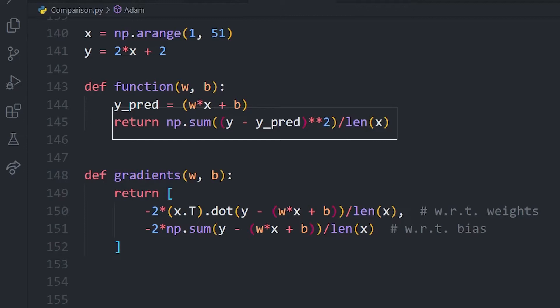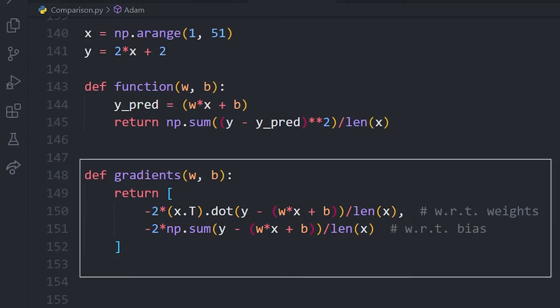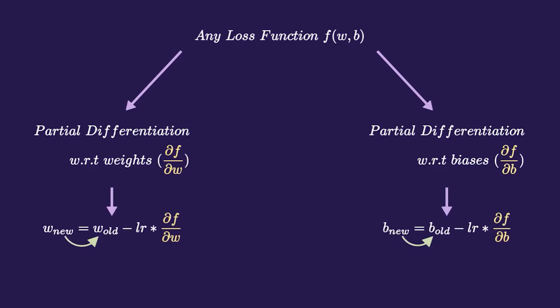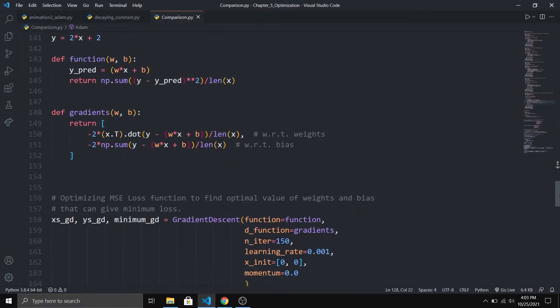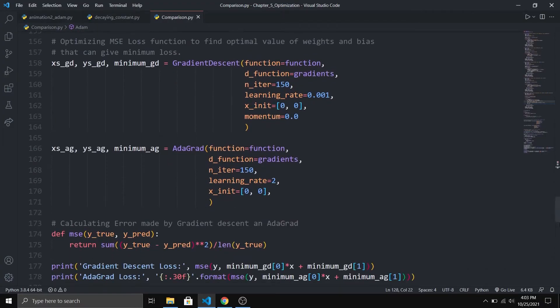The function is returning the mean squared error loss function. We will be giving this function to an optimizer so it can reduce this function to decrease the error rate. The gradients function is returning a list in which the first element is the partial derivative of the above function with respect to weights and the second element is with respect to bias. We discussed this in the previous video as well.